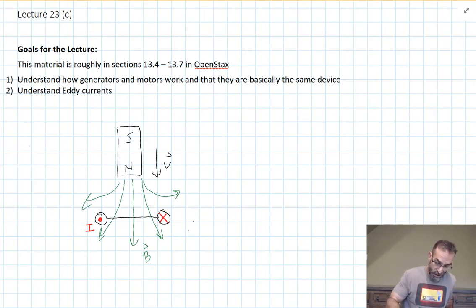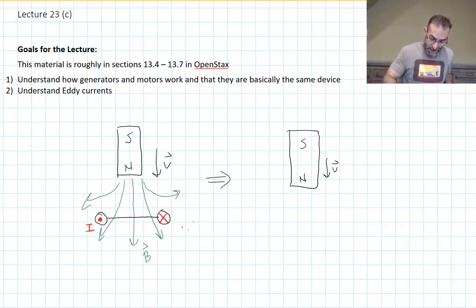That means I could redraw this. I could have my magnet coming down, and instead of a loop of wire, that loop of wire acts like a little electromagnet. And what direction is it oriented? With a north pole up. So what happens here?